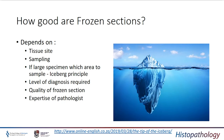How good are frozen sections in the intraoperative consultation setting? It depends on many variables: tissue site, sampling, and if it's a large specimen, how and what you sample. This is the iceberg principle — we may sample one or two centimetres of a lesion that may be 30 centimetres in diameter. How do we know that what we are sampling is representative of the whole lesion? That comes down to very good tissue sample site selection.